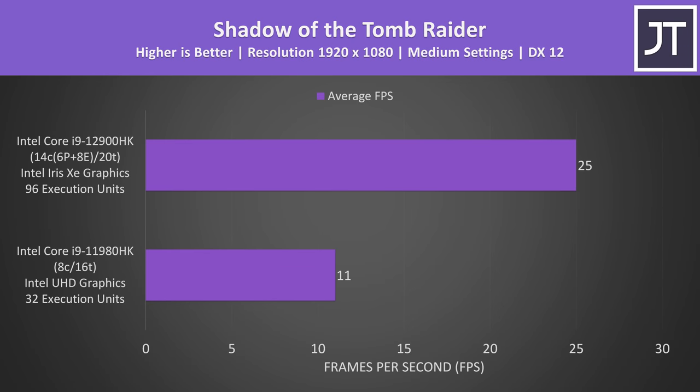Initially I was quite surprised to find that the integrated Intel XE graphics in 12th gen were able to offer 127% higher FPS compared to the Intel UHD graphics in 11th gen, but it makes sense upon discovering that 12th gen's iGPU has three times as many execution units. Obviously an i9 equipped laptop will probably have more powerful Nvidia graphics for gaming or content creation, but this noteworthy difference in iGPU performance will affect some of our other applications.